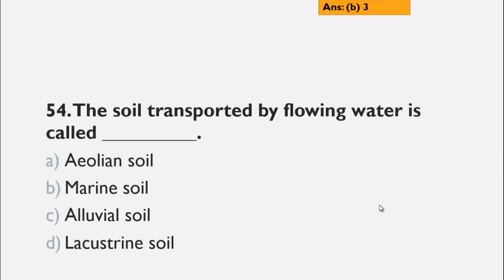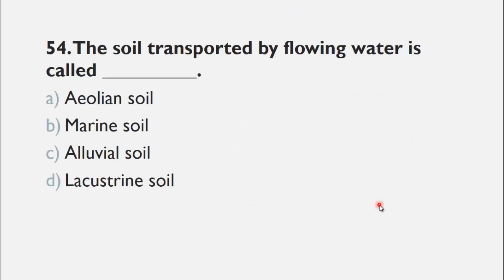MCQ number 54 is: The soil transported by flowing water is called ___. A) aeolian soil, B) marine soil, C) alluvial soil, and D) lacustrine soil. So the right choice for this question is C, alluvial soil.